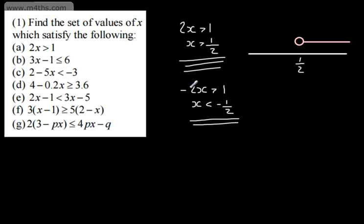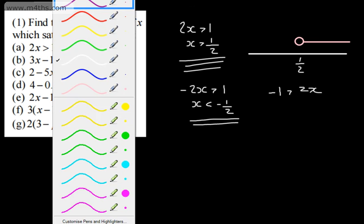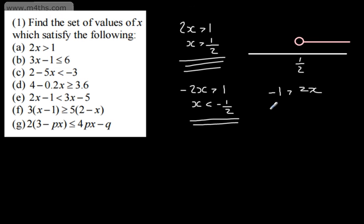To show why the sign flips: if we add 2x to both sides and subtract 1, we get negative 1 is greater than 2x. Dividing both sides by 2 gives negative 1 half is greater than x. So by rearranging we get the same result — just be careful with that.